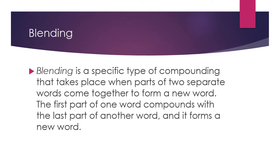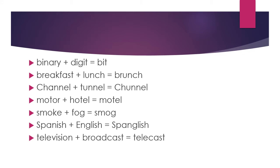Next, we have Blending. Blending is a specific type of compounding that takes place when parts of two separate words come together to form a new word — the first part of one word combines with the last part of another. Examples: binary plus digit gives bit; breakfast plus lunch gives brunch; channel plus tunnel gives chunnel; motor plus hotel gives motel; smoke plus fog gives smog; Spanish plus English gives Spanglish; television plus broadcast gives telecast.